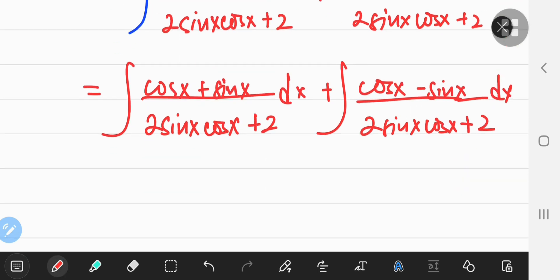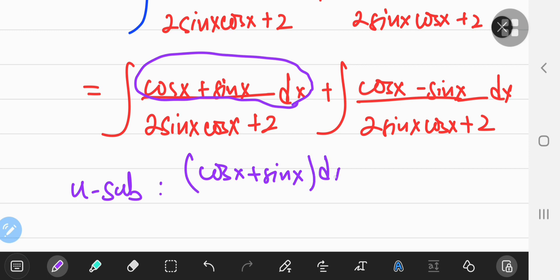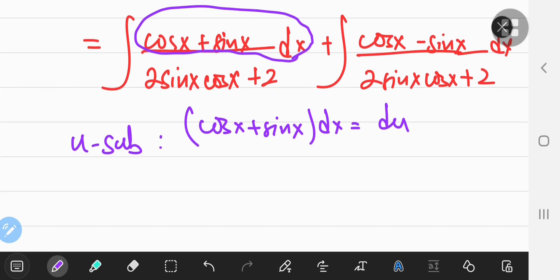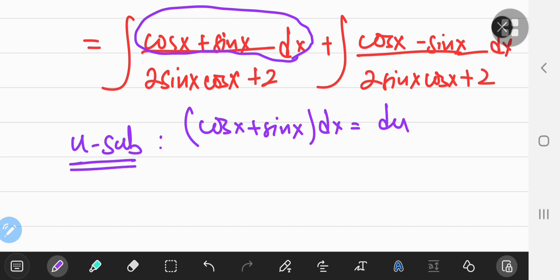So the trick is to look at the numerator, like this integral over here. You look at the numerator, and I want a u substitution. I want to perform a u sub where cos x plus sin x dx equals the differential of my u variable that I'm going to substitute for something. So I know what the numerator looks like, and I know what the differential looks like in my u sub, but I don't exactly know what the u sub itself looks like.